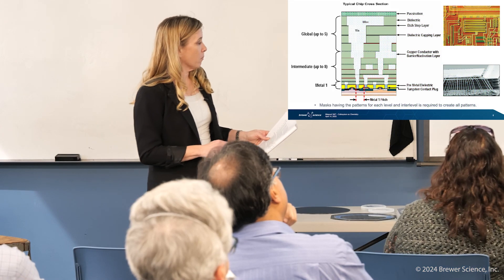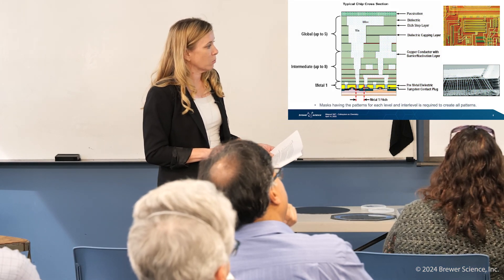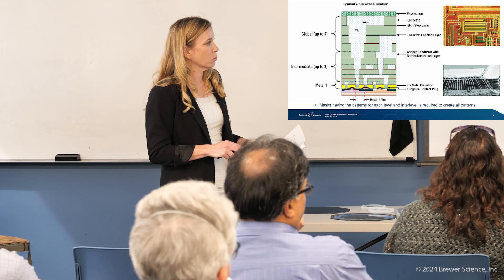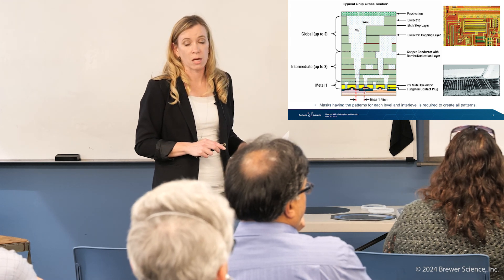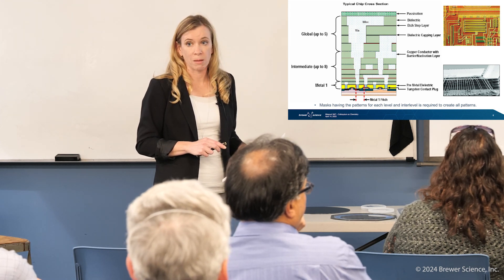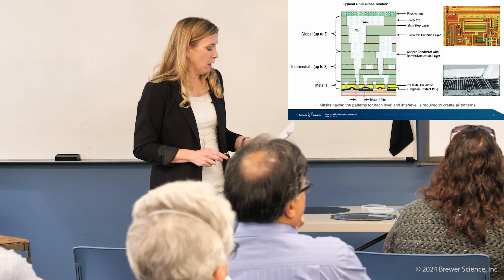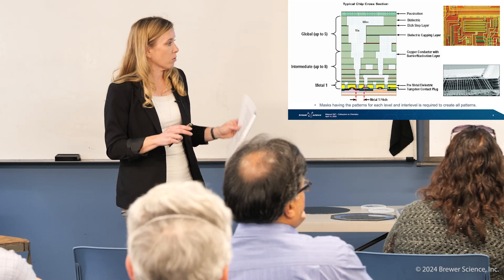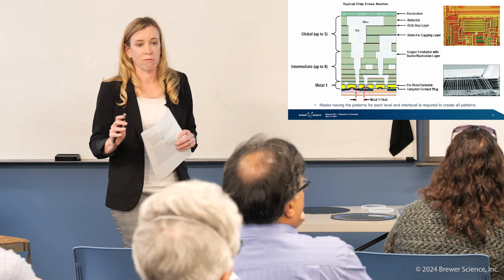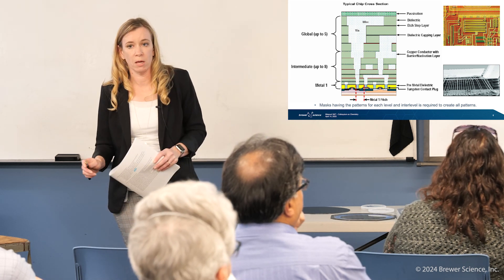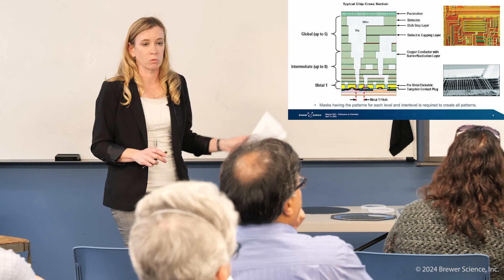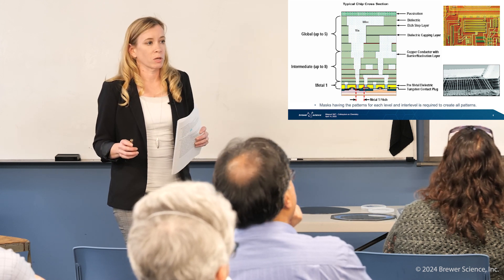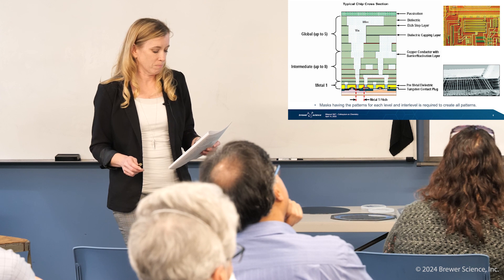And so what lithography does — every one of these layers has to go through a photolithography step, sometimes multiple steps just to get where they need to go. And then each of those layers requires different processes. You may have to deposit some metal, you may have to remove something, do something else, and all of that requires a different photo step.